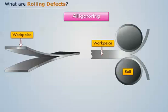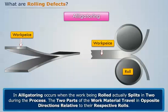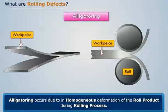Alligatoring occurs when the work being rolled actually splits in two during the process. The two parts of the work material travel in opposite directions relative to their respective rolls. Alligatoring occurs due to inhomogeneous deformation of the rolled product during the rolling process.